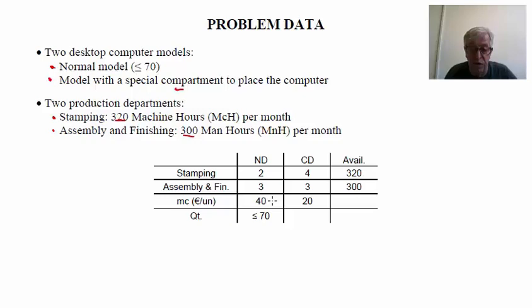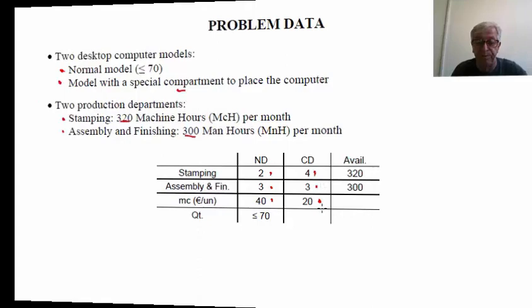The normal desks provide a contribution margin of 40 euros per unit, and the compartment desks provide a contribution margin of 20 euros per unit. We have some information related with the production process: normal desks require 2 hours of the stamping department and 3 hours of the assembly and finishing department, while computer desks require 4 and 3 respectively. This table summarizes the data involved in this problem.